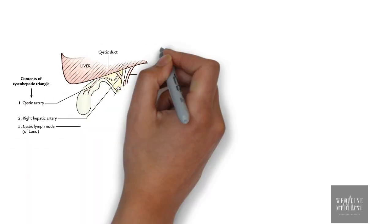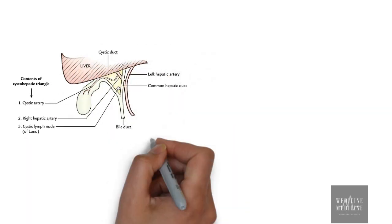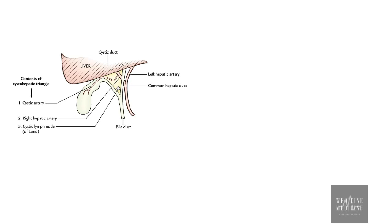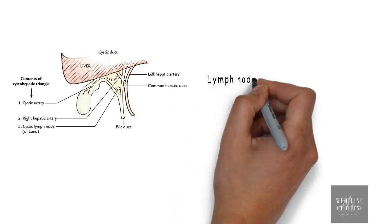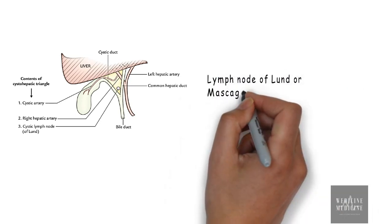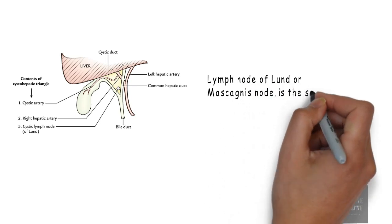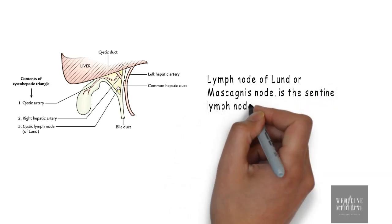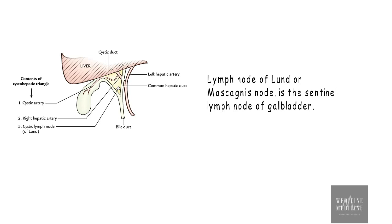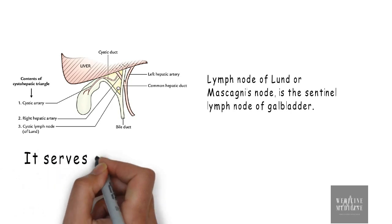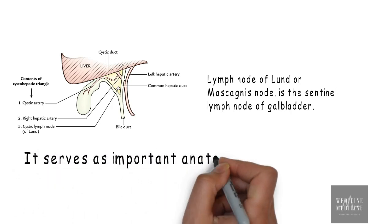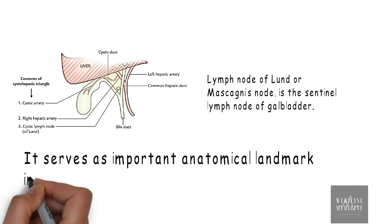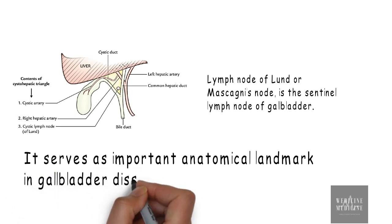Let's have a brief discussion about lymph node of Lund, which was first described by an American surgeon named Fred Betts Lund. This is also referred to as mascagnes node and is the sentinel lymph node of gallbladder, which is the first lymph node to be involved in gallbladder carcinoma as well as the lymph node involved in cholecystitis. This lymph node serves as an important anatomical landmark in gallbladder dissection.